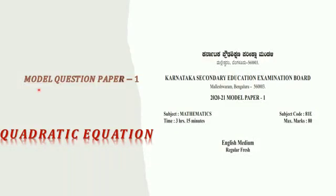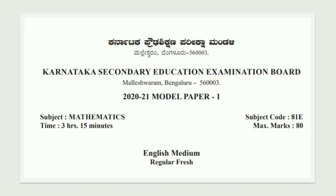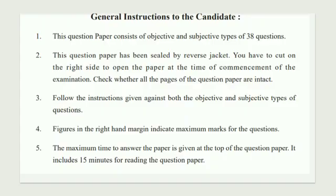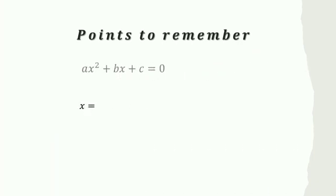In this class let us solve the modern question paper 1 issued by Karnataka Secondary Education Examination Board for the year 2021. We will solve questions on quadratic equations. First we have to read the instructions in the question paper, which is very important. In the chapter on quadratic equations, some key points are there to remember.